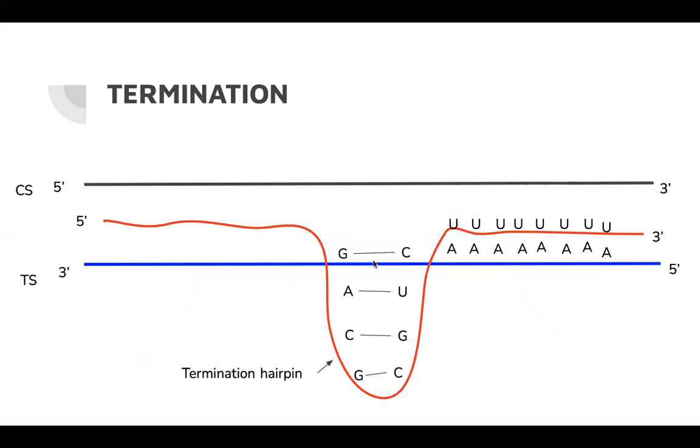The last step is termination. This occurs when there are inverted repeats that lead to termination hairpins. This is followed by a long strain of adenine and uracil base pairs that are weak. This strain is then broken, terminating transcription.